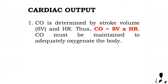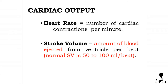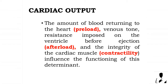Cardiac output must be maintained to adequately oxygenate the body. Heart rate is the number of cardiac contractions per minute, and stroke volume is the amount of blood ejected from the ventricle per beat. Normal stroke volume is 50 to 100 milliliters per beat. The amount of blood returning to the heart is termed preload, venous tone resistance imposed on the ventricle before ejection is termed afterload, and the integrity of the cardiac muscle is termed contractility.